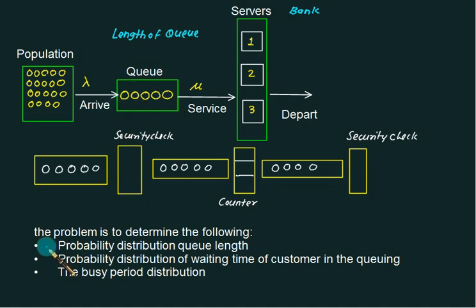We are interested in the probability distribution of queue length, which entirely depends on the value of mu. If your service is fast then the queue length will be less. As the number of servers increases, the cost of servers also increases — that cost has to be borne by the establishment. Unnecessarily increasing servers is a waste of money, so you have to check the utility of a server. Unnecessarily paying for servers will increase the cost for the entire establishment. Basically you have to do the optimization in the waiting line.